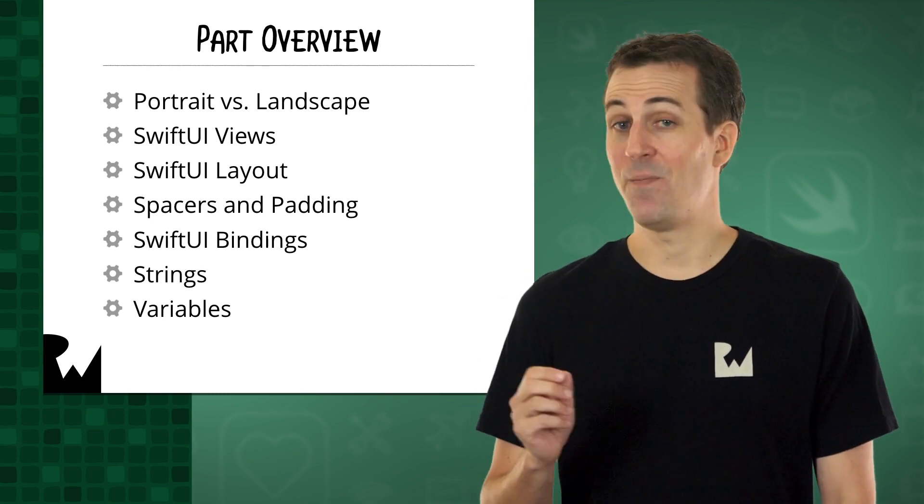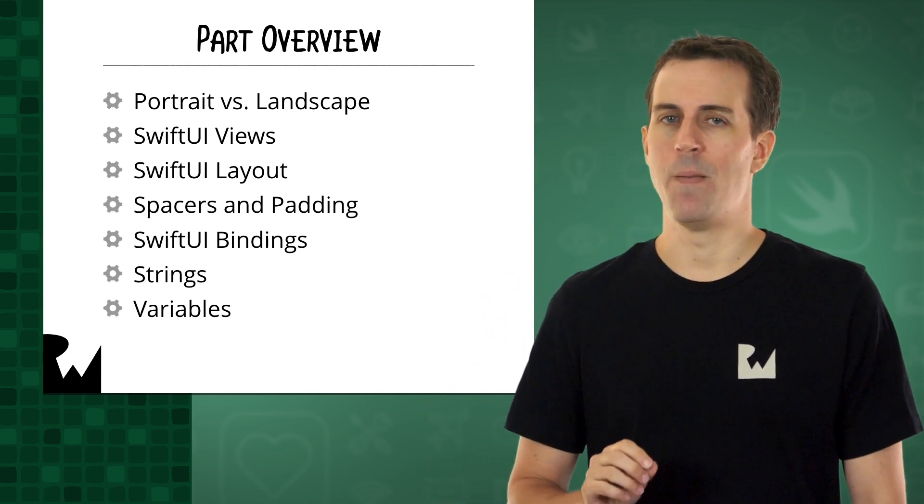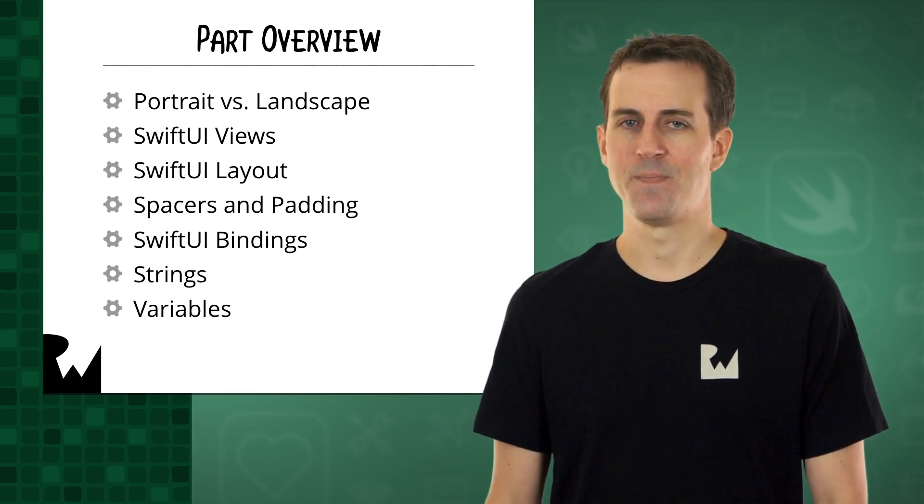You'll then learn how to get the value of the slider and report it to the user, and along the way, we'll dive deeper into SwiftUI bindings and then learn about Swift strings and variables. Okay, so let's keep working through our programming to-do list in our journey to create Bullseye.